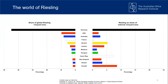Looking at the world of Riesling — why are we working with Germany? This graph shows on the left the share of global Riesling vineyard area; Germany is quite predominant. On the right, the share of Riesling of their national vineyard area — it's an important variety for Germany. Australia is third on the list behind the USA with a decent share of Riesling, but it doesn't make up a great deal of our national vineyard area or crush.